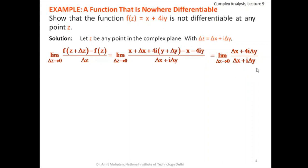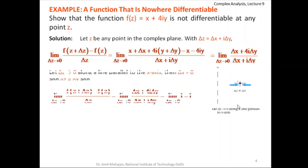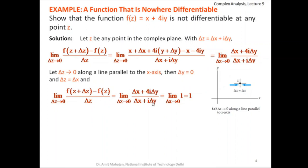If this limit exists for any path as Δz → 0, we say the derivative exists. We'll show there are at least two paths for which the limit is different. Path one: let Δz → 0 along a line parallel to the x-axis, i.e., in the horizontal direction. In this case Δy = 0 and Δz = Δx. The expression becomes Δx / Δx = 1, and as Δx → 0 the limit is 1.